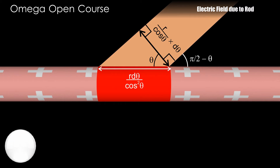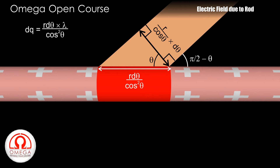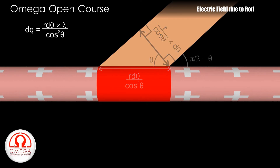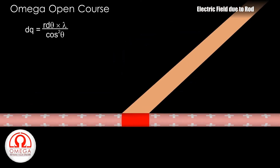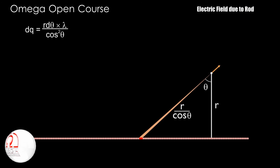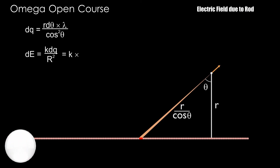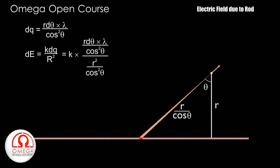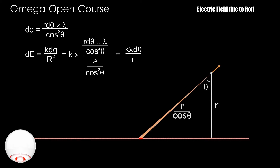The linear charge density of the rod is lambda. Therefore, the charge on this part is R·d-theta·lambda divided by cos²theta. So, the electric field due to this small part at the given point is K times charge divided by distance squared, or K·R·d-theta·lambda/cos²theta divided by R²/cos²theta. Simplifying, we get K·lambda·d-theta divided by R.